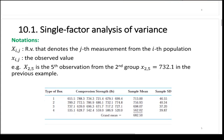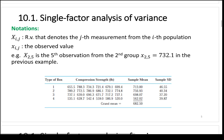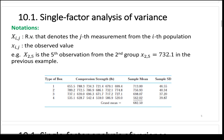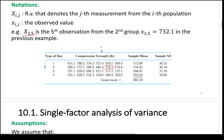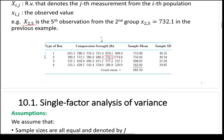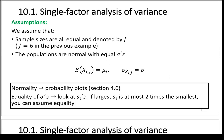More notation: x-sub-ij denotes the j-th measurement from the i-th population. For example, x-sub-25 means go to the second population, fifth data point — that's 732.1. That's the actual value x-ij or x-25. This subscript notation will be used throughout and it's important to keep the subscripts straight.